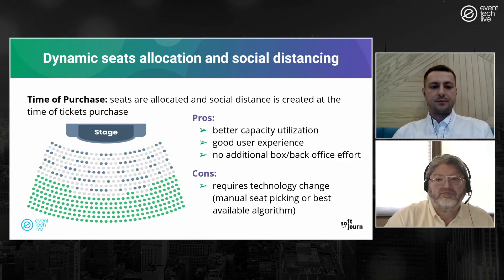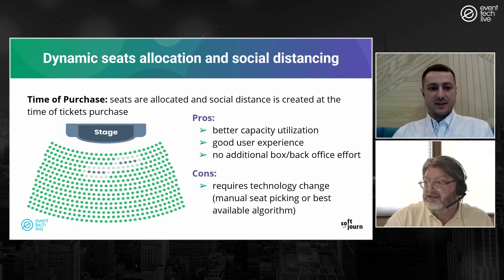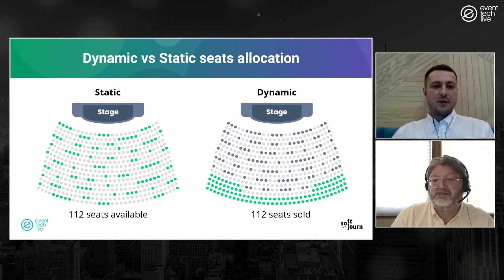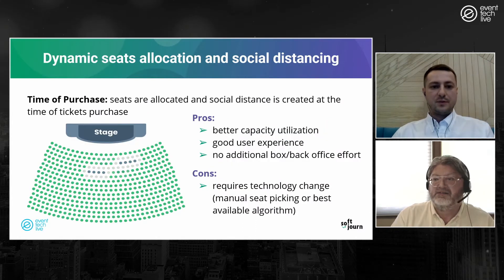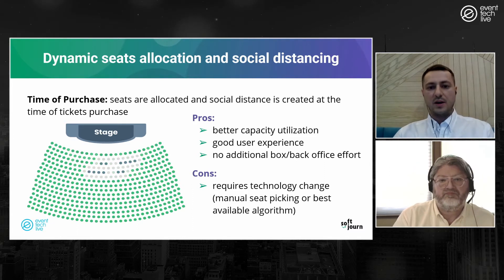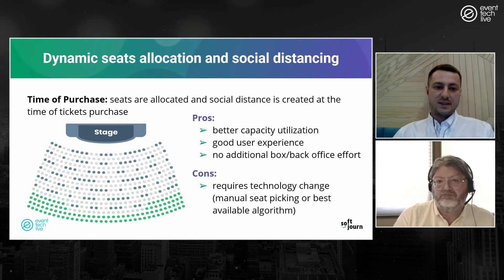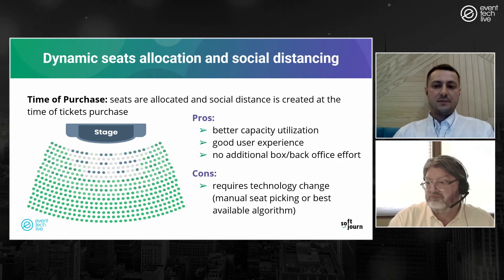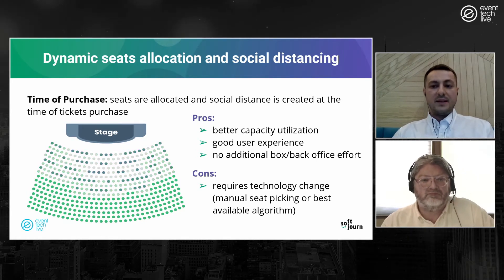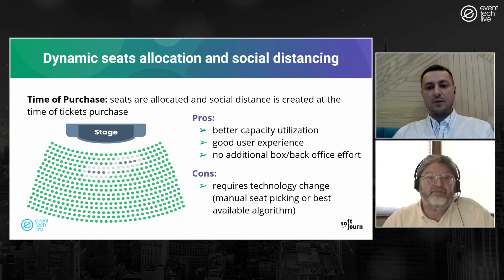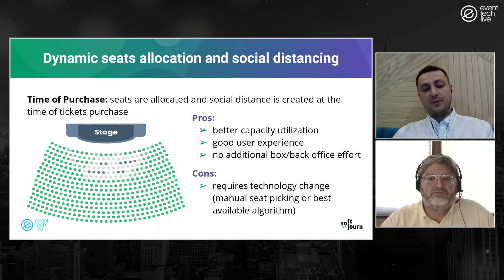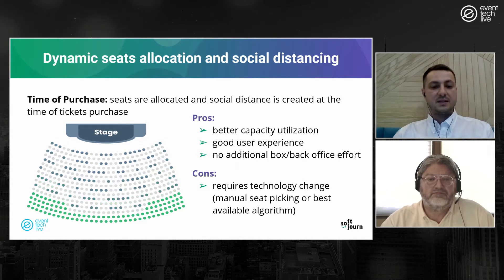The second dynamic option is time-of-purchase allocation. With this option, the venue seating chart is presented to the patron with all available seats and without social distancing shown upfront, but once the patron chooses their seat, all the surrounding seats are blocked to create a social distance zone, as shown in the animation. This can be achieved via changes to the best available algorithm or the pick-your-own-seats tool, defining a number of rows in front or behind and seats to the left and right.